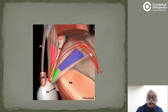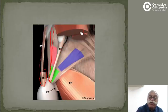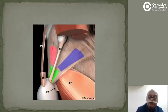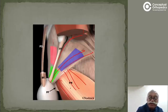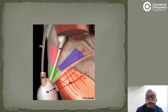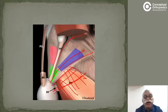The biceps femoris tendon has also been cut from the upper end of the fibula. The relevant anatomy to understand includes the fibular collateral ligament, the fabellofibular ligament, and the arcuate ligament — and most importantly, the popliteus tendon and its strengthening via the popliteofibular ligament gaining attachment to the fibula. All these structures are important when dealing with injuries of the posterolateral corner.